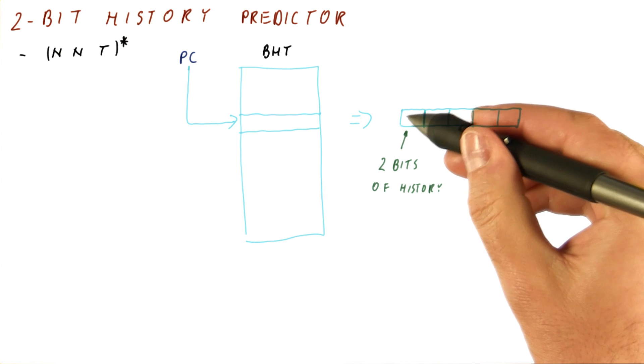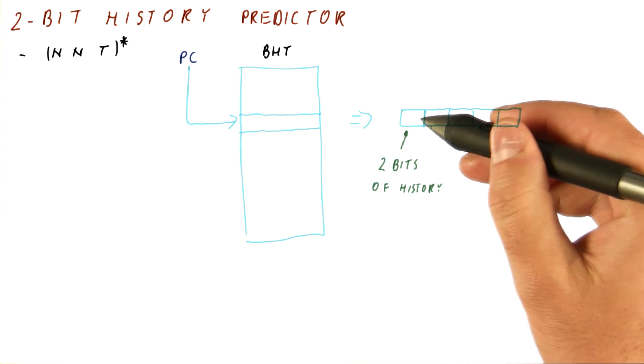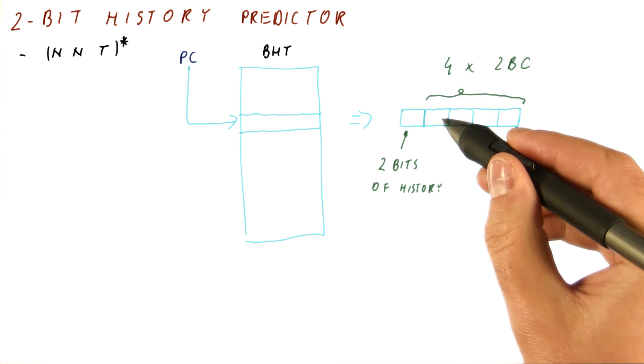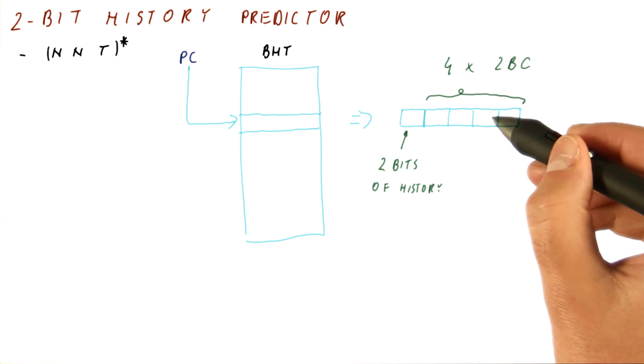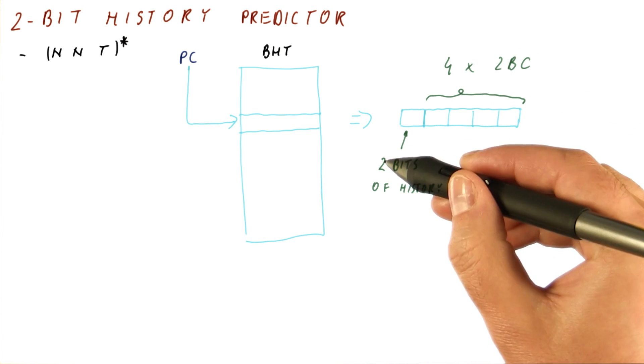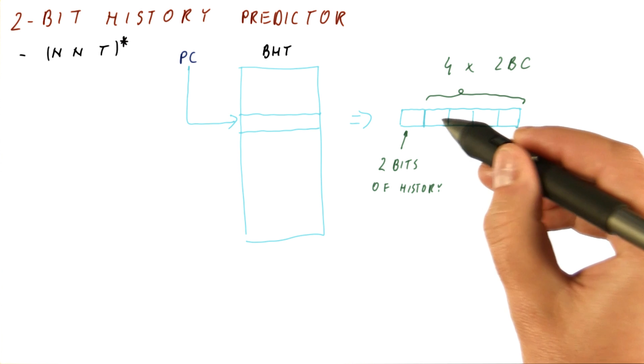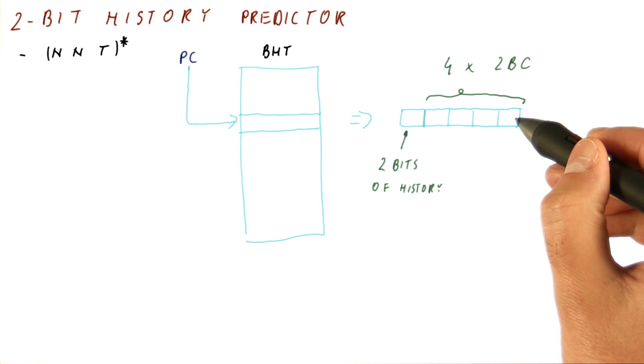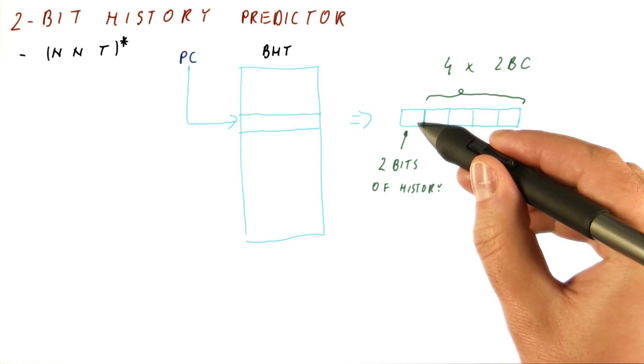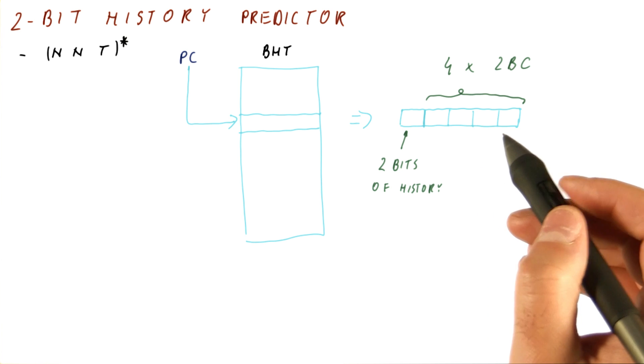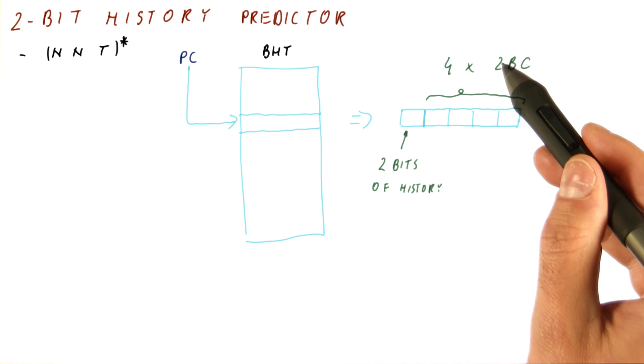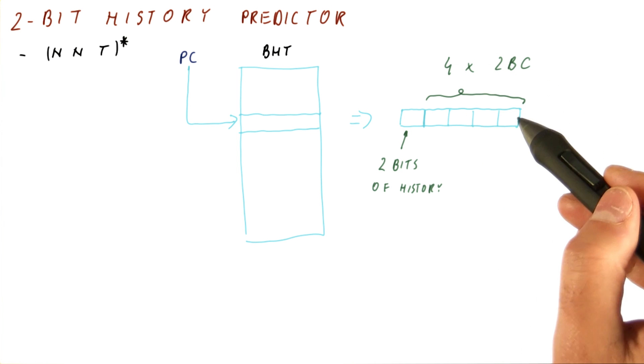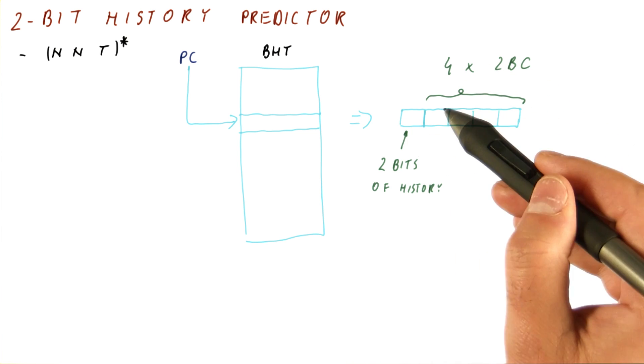So these are the last two outcomes of this branch. And then we have four times a two bit counter, one for each possible history. So with two bits, we will index into this array of counters and use the appropriate counter for the given history. So as you can see, the overall cost of this predictor now is two bits of history plus four times two. So it ends up costing us 10 bits per branch.